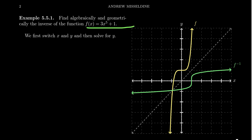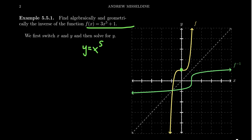For example, consider the function f of x equals 3x to the fifth plus one, which you can see right here. This would be the standard y equals x to the fifth, which looks like an odd monomial with this type of shape. But there have been some transformations done to it: we've stretched it vertically by a factor of three, so it's three times as steep. And then it's also shifted up by one, so instead of the vertex being at zero comma zero, it's at zero comma one.